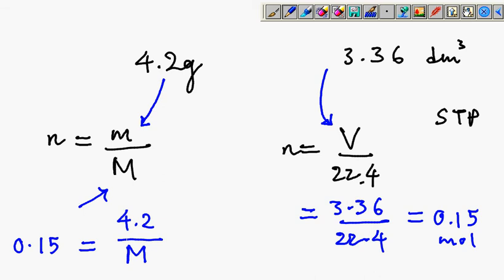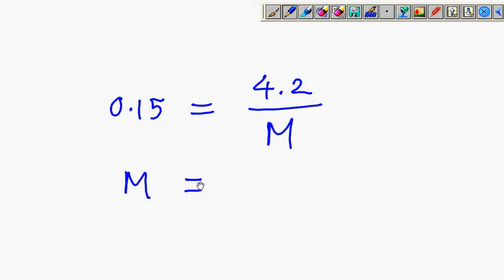With a new page, 0.15 equals to 4.2 over molar mass. So the molar mass is 4.2 divided by 0.15. That would give you molar mass of 28 grams per mole.